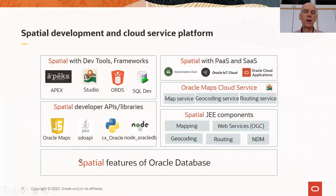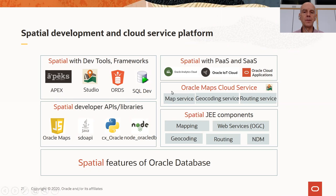The overall platform looks like this: I've talked about the spatial features in the database, and the services sitting on top — JEE components running in a Java runtime environment outside the database — to render cartographic maps, which we make available as the Oracle Maps Cloud Service, used by the IoT Cloud and Oracle Analytics Cloud. We have developer APIs: if you want interactive maps, you can use JavaScript and the Oracle Maps API. For Python, there's the CX Oracle integration, or Node Oracle DB. You can use all of these in tools and frameworks like APEX, ORDS, or SQL Developer.